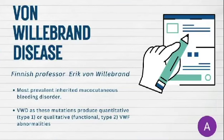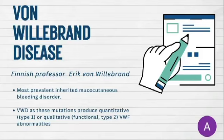Finnish professor Eric von Willebrand described von Willebrand disease. Both quantitative and functional abnormalities lead to decreased platelet adhesion to injured vessel walls, impairing primary hemostasis. It is the most prevalent inherited mucocutaneous bleeding disorder.